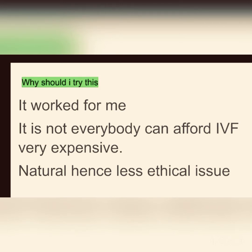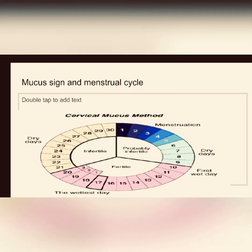This method I'm going to teach you has no such ethical issues at all. To use it, you have to understand the mucus sign and your menstrual cycle — using the app I asked you to download earlier. To understand your mucus sign, I'm going to leave a link for you to get a chart that you can use to track your mucus cycle. The app will help you calculate your menstrual cycle.